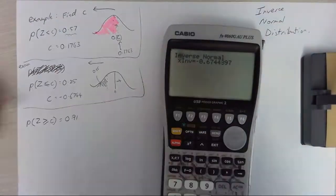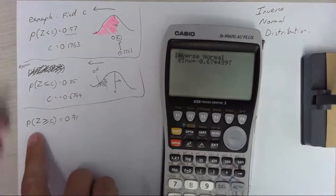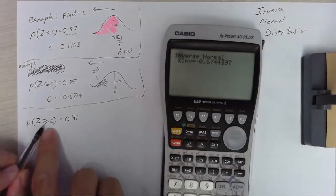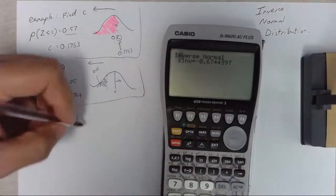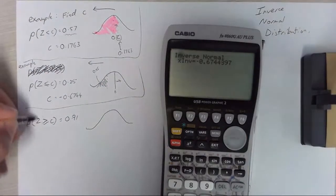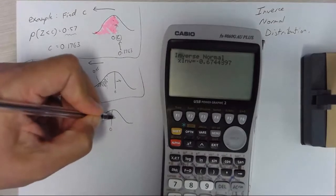Okay let's flip things around here with another example. The probability that z is greater than or equal to c equals 0.91. Okay so it's still a normal distribution because we're dealing with the z. So we've still got 0 and 1 there.